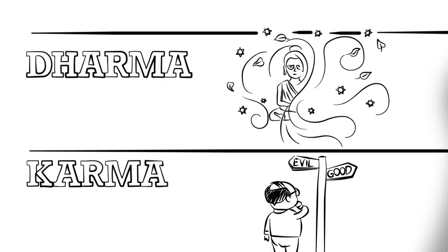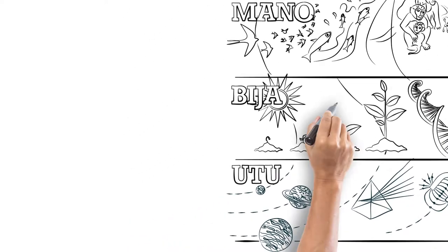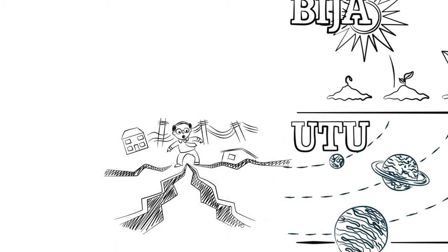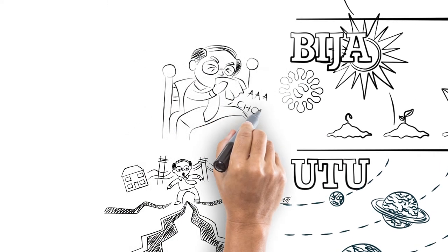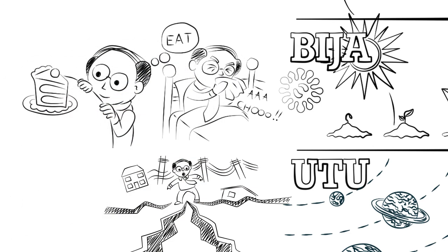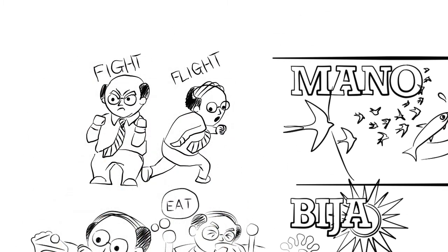In this context, we can see how karma does not determine everything that happens to us. For example, if we are unlucky enough to be around when an earthquake happens, it will be because of geological Utu Niyama processes, not because we have done something wrong and the earthquake is our punishment. If we catch a cold, it is probably down to Bija Niyama processes, as are the urge to eat or have sex. Reflexes and instincts we experience, such as fight or flight, are down to the Mano Niyama.